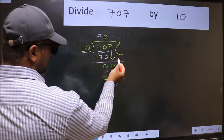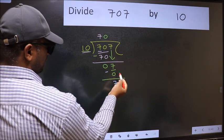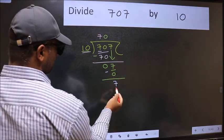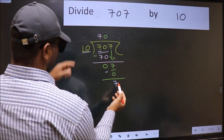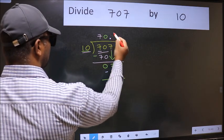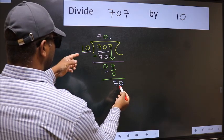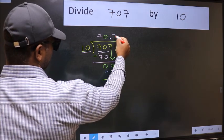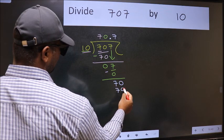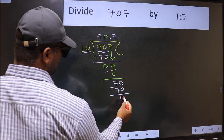Over here, we did not bring any number down, and 7 is smaller than 10. So now we can put dot and take 0. So 70. When do we get 70 in 10 table? 10 times 7 is 70. Now we should subtract. We get 0.